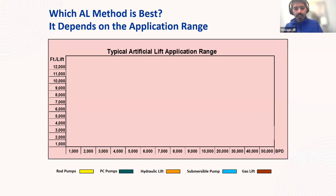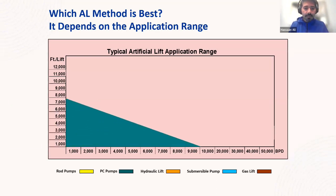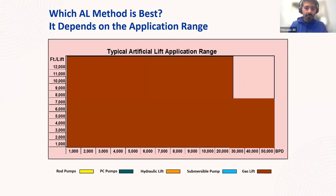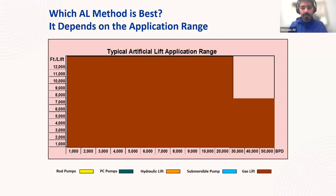For very low flow and lower lift applications, we use rod pumps, beam pumps, or pump jacks. As you move toward higher flow rates and deeper applications, we apply PC pumps, and then submersible pumps, which cover a large envelope for high flow rate and deep applications. When you go toward gas lift, they are kind of the king of artificial lift systems — used in very high flow rate applications up to 50,000 barrels per day in deep-sea subsea architecture.